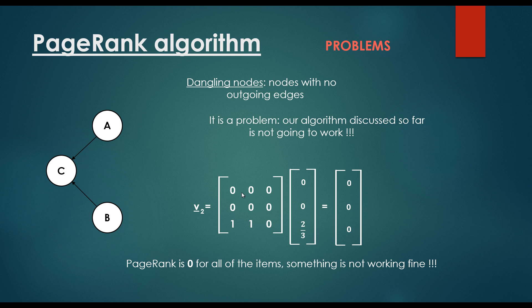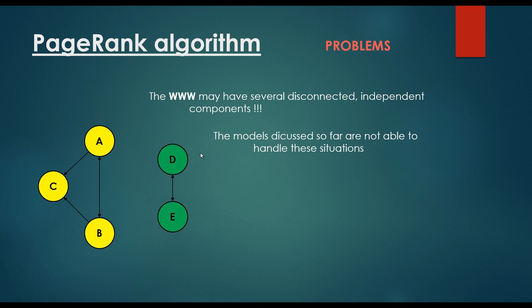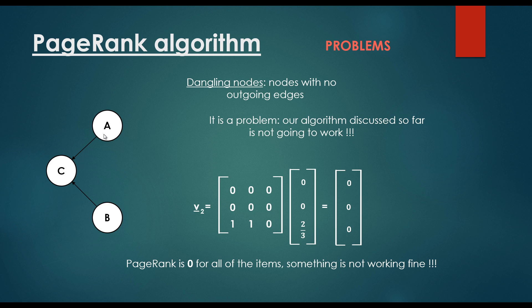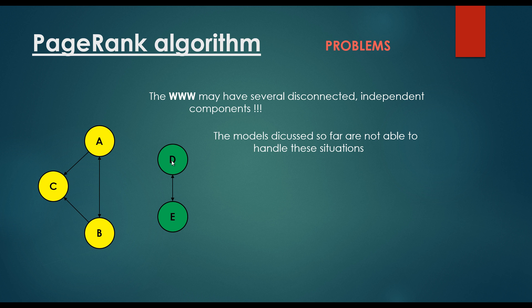Okay, what about another problem? If there are several disconnected components. So the World Wide Web may have several disconnected, independent components. The models discussed so far are not able to handle these situations. So if we have dangling nodes, or if there are lots of disconnected components of the World Wide Web, the methods discussed so far are not going to work.